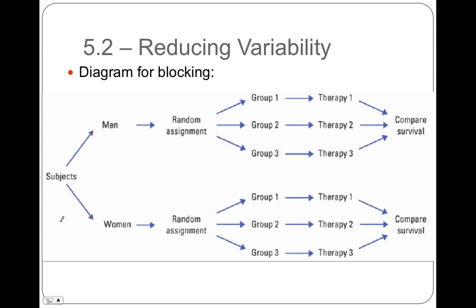Here's an experiment diagram that includes blocking. We don't start with random assignment — we start by splitting subjects into men and women, which is the blocking variable. Then we randomly assign the men into three groups and the women into three groups. They go through three different treatments, and the response variable here is survival.